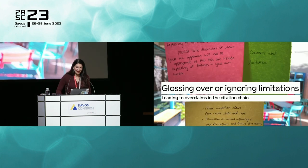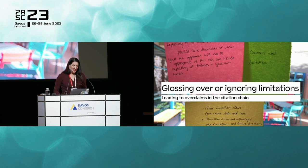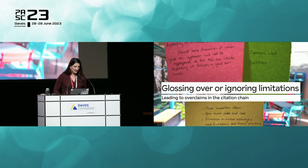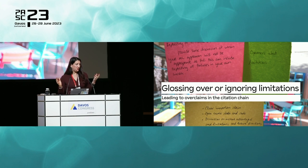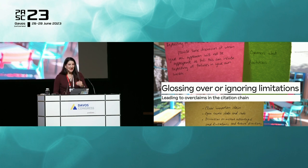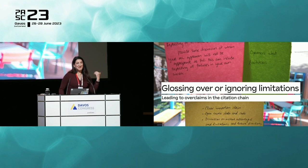Another anti-pattern that should worry us — also not exclusive to scientific machine learning — is glossing over or ignoring the limitations of proposed new methods. The issue is it leads to ballooning overclaims in the citation chain, because then other papers say 'such and such solved this equation with a neural network,' when in fact they did not, or did so under very limited conditions. I always tell my students: always go back to the source. Citing a paper because somebody else cited it and believing the second-hand characterization is a bad idea.